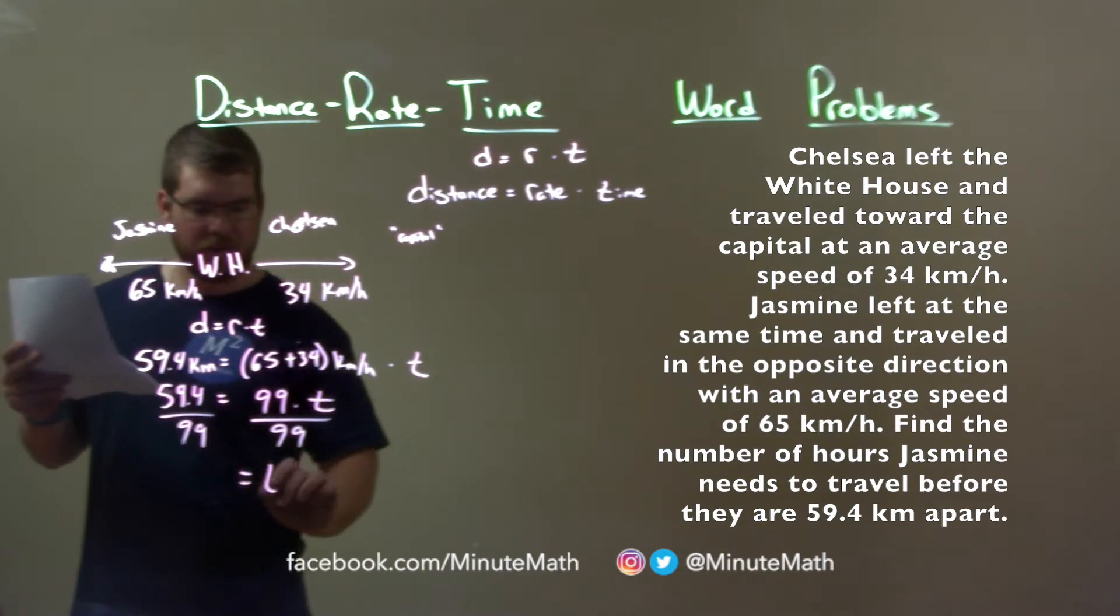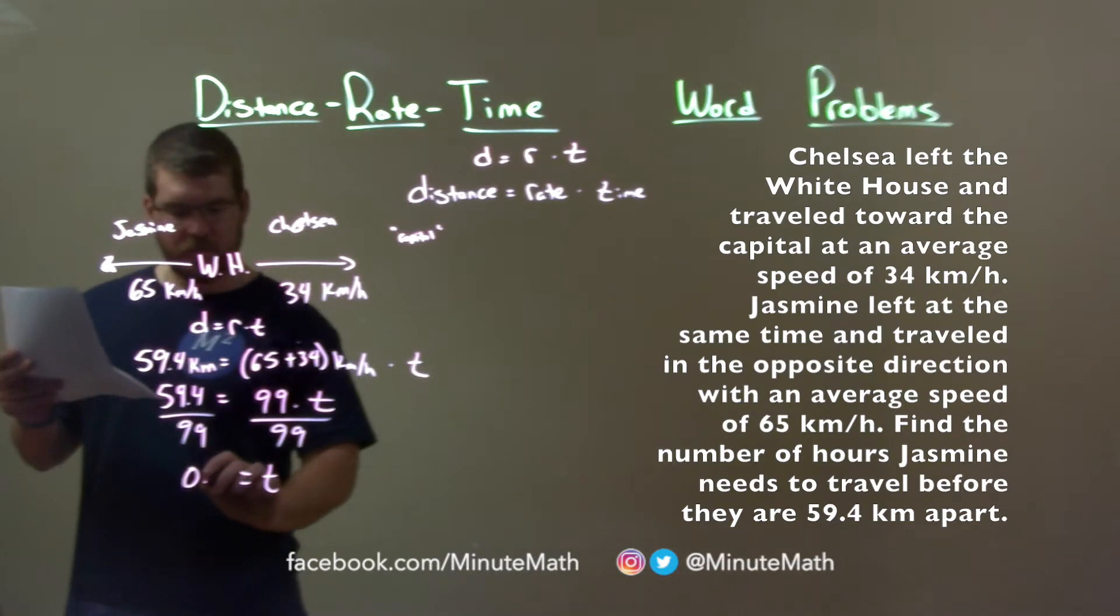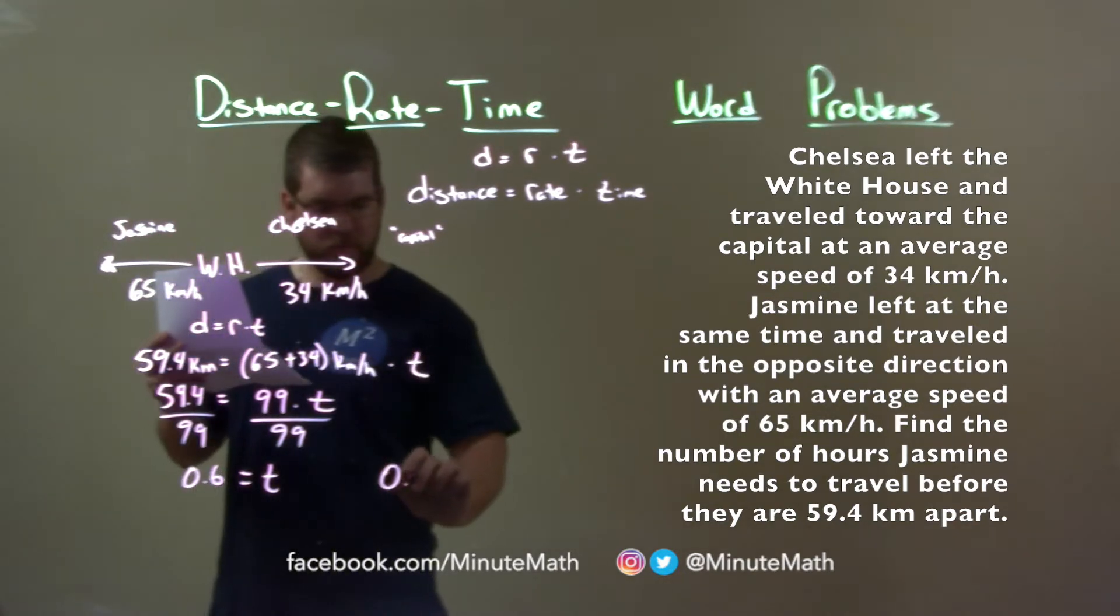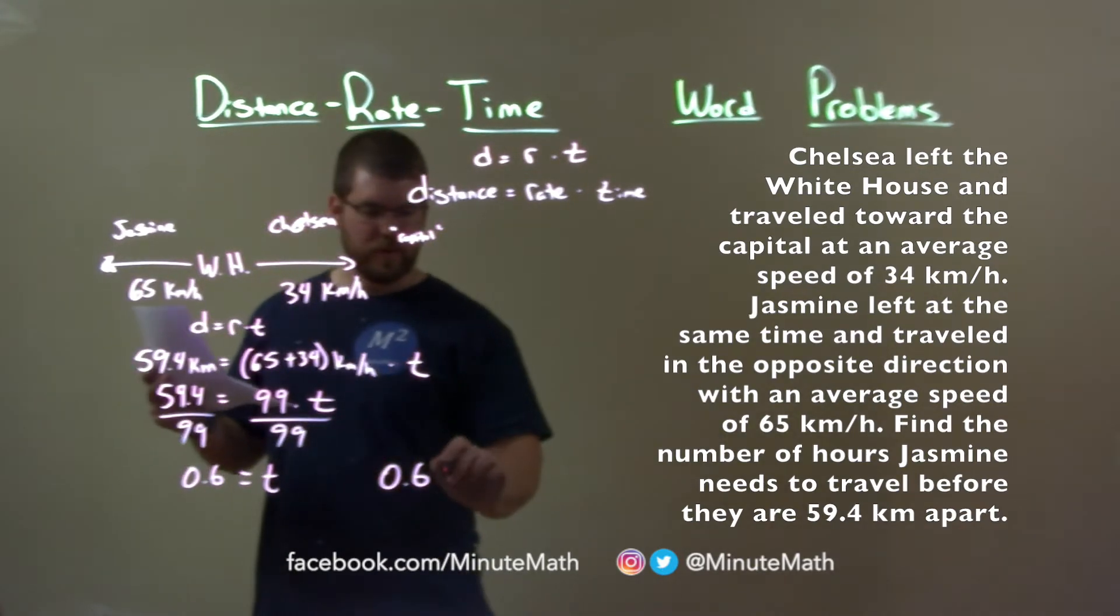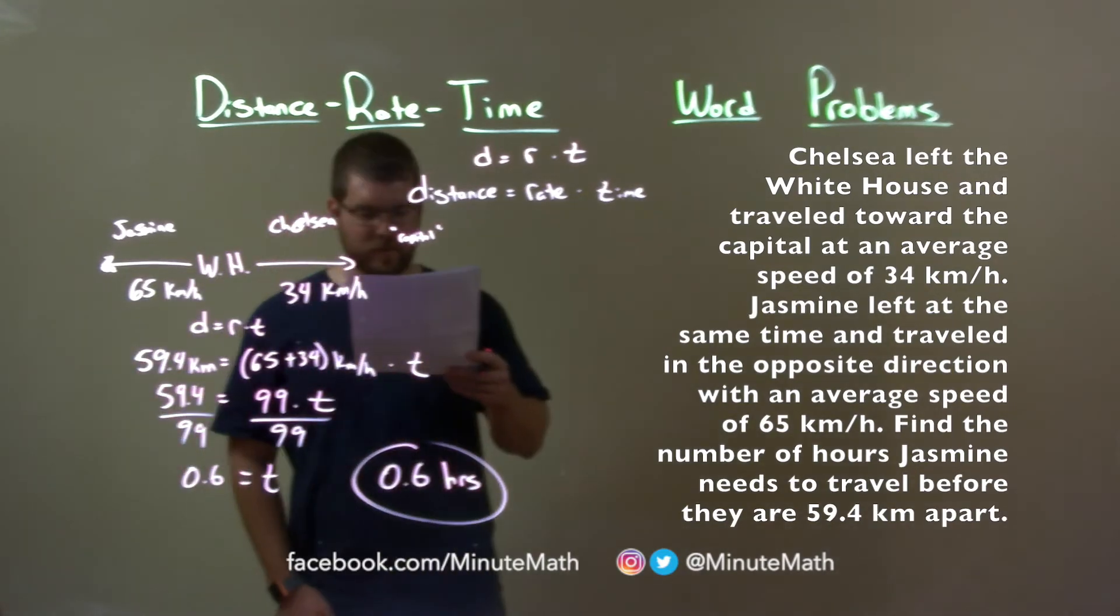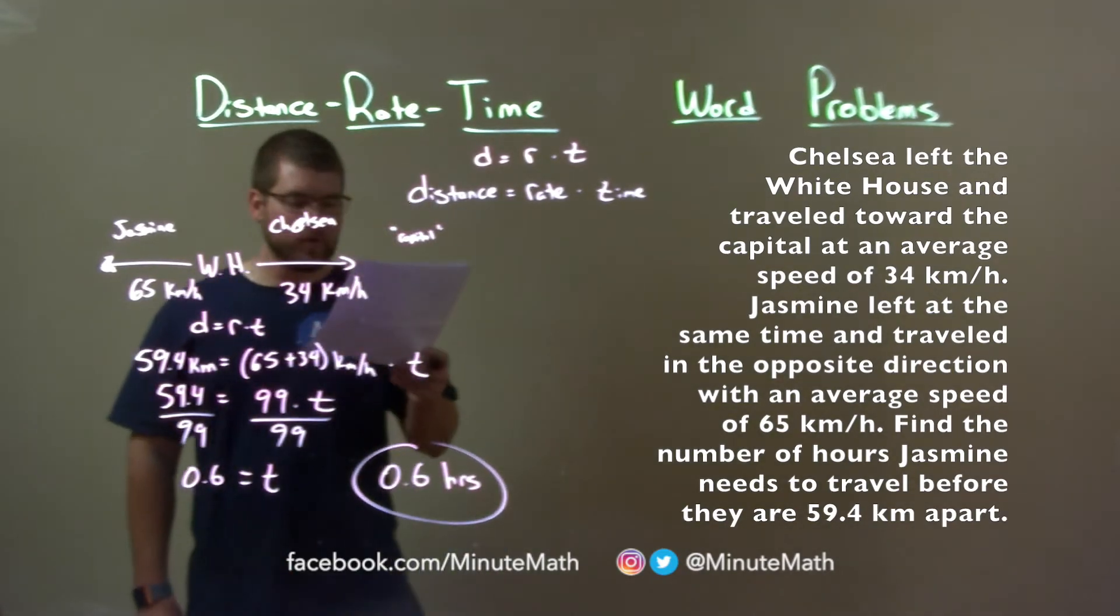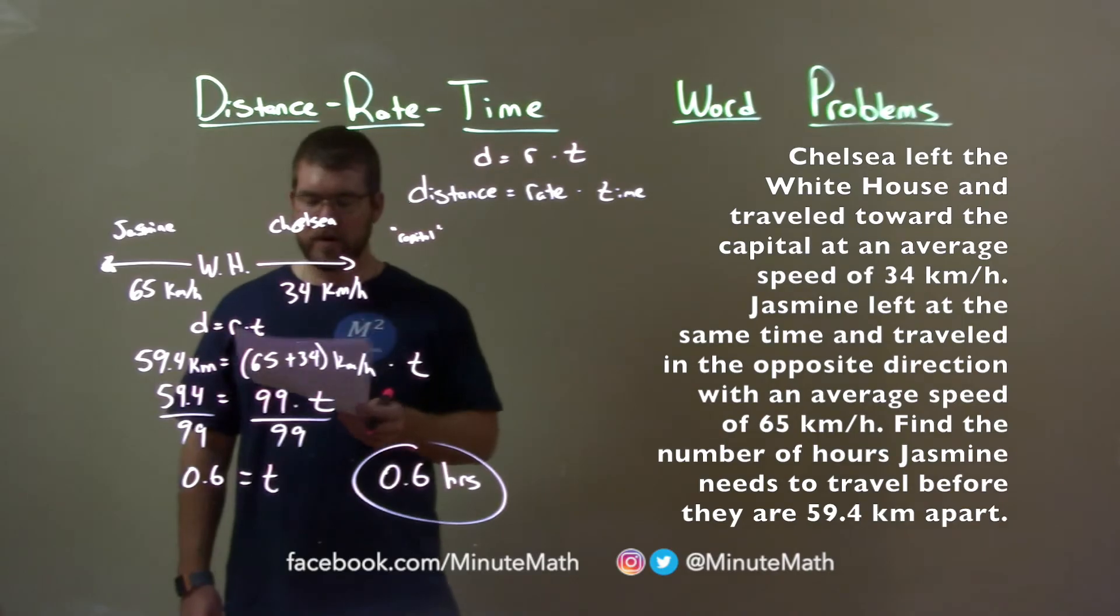And T is now by itself, which is 0.6. So after 0.6, or 59.4 divided by 99 is 0.6, 0.6 hours is how long Jasmine needs to travel before the two of them are 59.4 km apart.